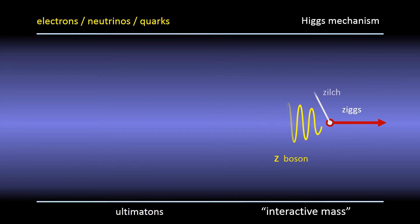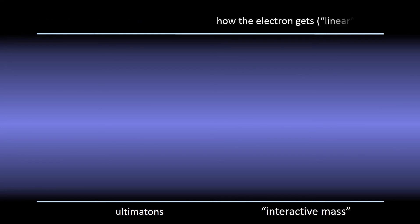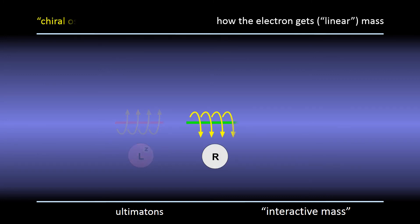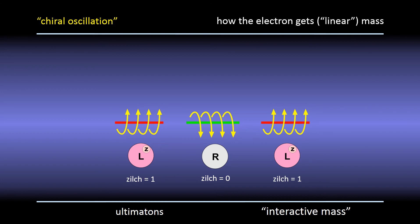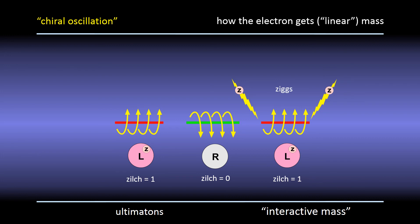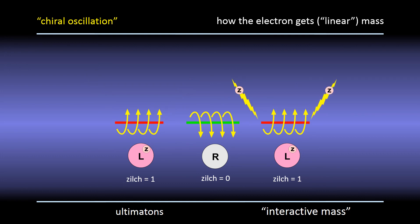Scientists currently use a similar scheme to give electrons this same interactive kind of mass. In the standard model, electrons continually flip between left and right-hand states. In their left-hand state, electrons have zilch or weak hypercharge; in their right-hand state, no zilch. To explain this broken symmetry, the standard model requires that electrons continually absorb and then emit some quantum of zilch — mathematically, they absorb and emit a ziggs. It's the rate at which electrons absorb and emit this zilch, the rate at which they flip between left and right-hand states, that defines their interactive or Higgs-type mass. In 1930, Schrödinger gave this flipping, this trembling oscillation a name — let's call it Zitta for short.